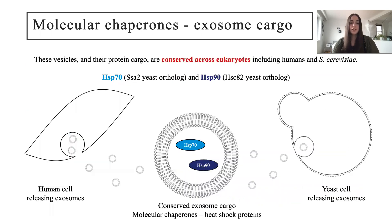Yeast cells share similarities with human cells, with many proteins performing the same function between species, which is referred to as orthology. We know that both human and yeast release vesicles — exosomes — and these vesicles contain common protein cargos known as molecular chaperones, including heat shock proteins, in particular the Hsp70 and Hsp90 families.